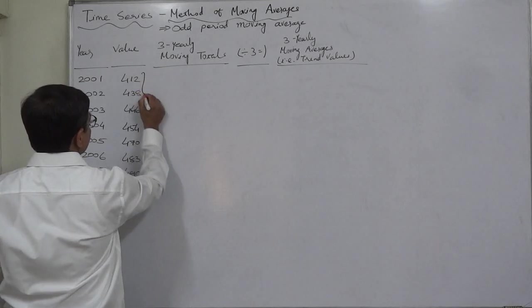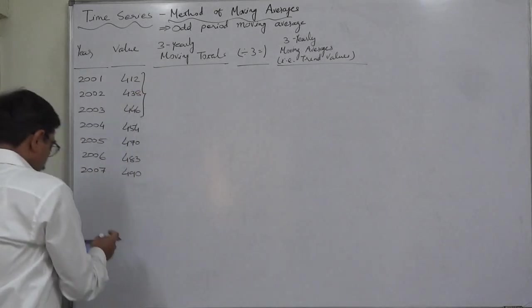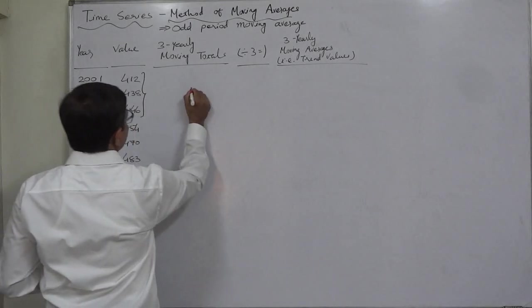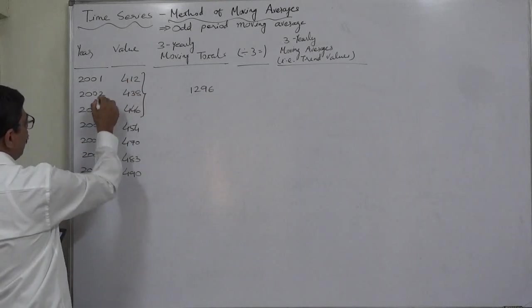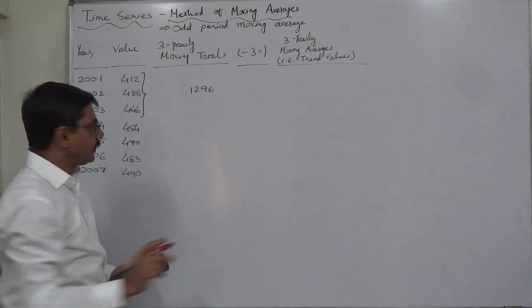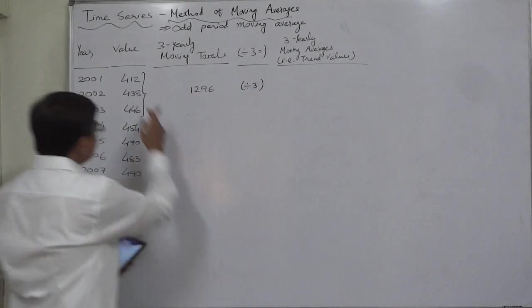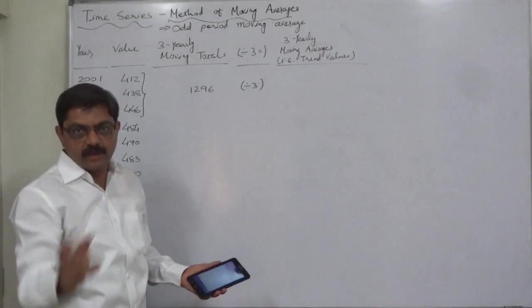Total of first three - yes, I have already written the totals - that is 1296. Yes, this is the total of 2001, two, and three, first, second, and third year. This is total. If we divide it by three, because this is total of three, so we need to divide it by three: sigma x upon n.